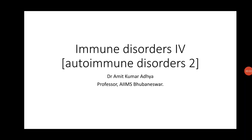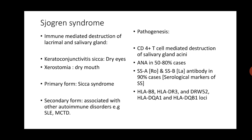Hello students, welcome to the fourth lecture on Immune Disorders. Here I shall talk about some of the autoimmune disorders. I shall first talk about Sjögren Syndrome. Although systemic lupus erythematosus and rheumatoid arthritis are very common, Sjögren Syndrome also occurs frequently.